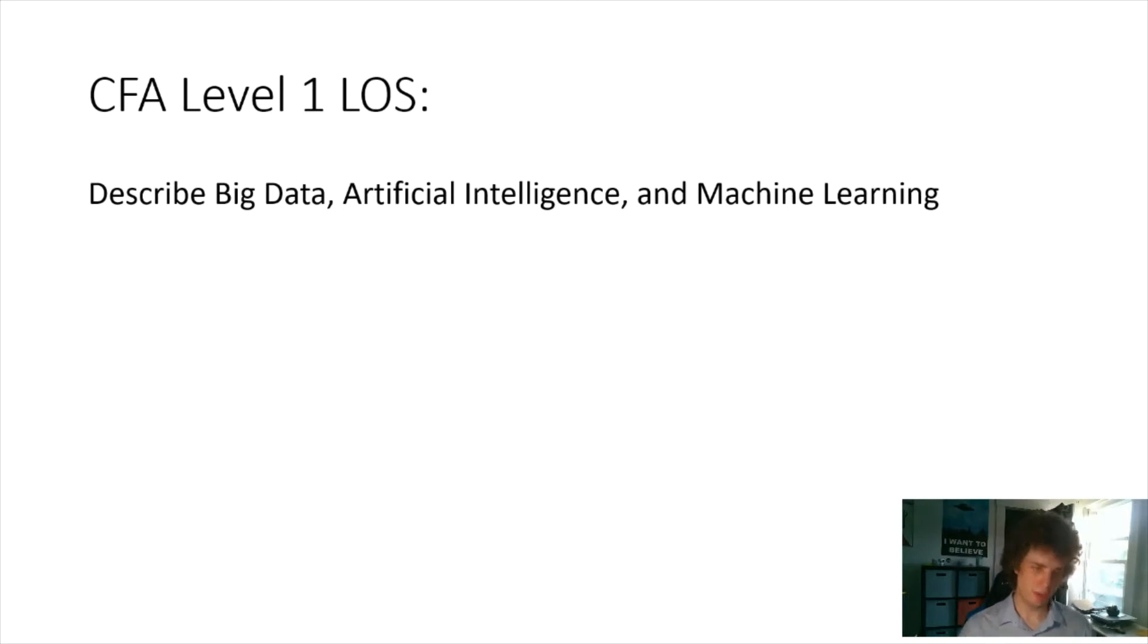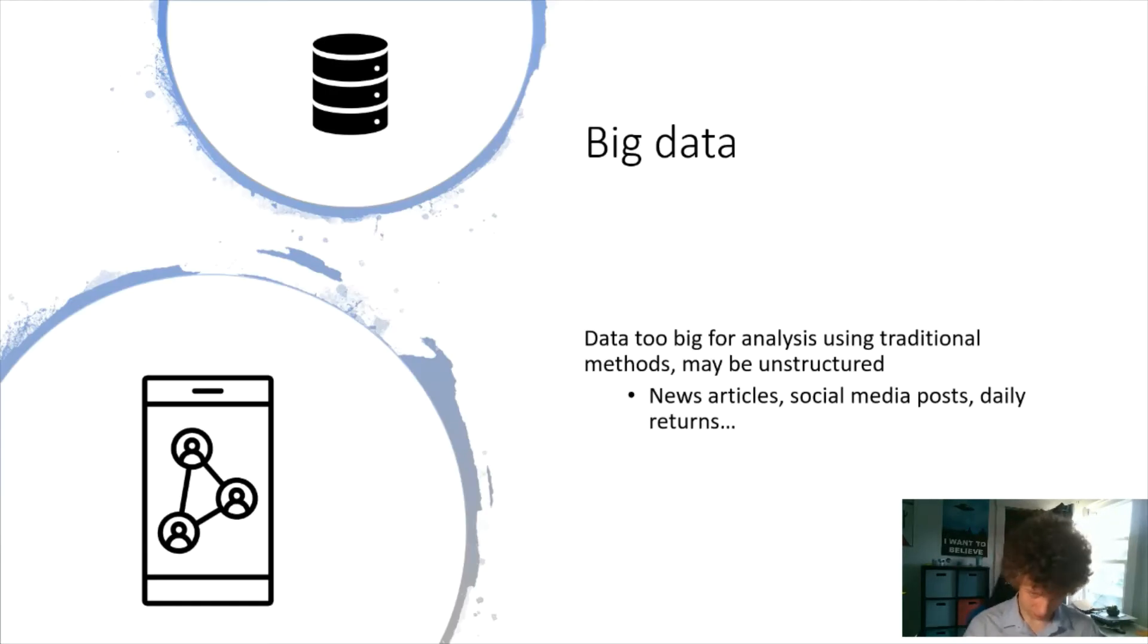For the Level 1 Outcome Statement, they're essentially asking you on a very broad level to define big data, artificial intelligence, and machine learning. This idea of big data is essentially exactly what it sounds like. We live in this age now where we're constantly creating new data faster than we can analyze it and the volume is just so big.